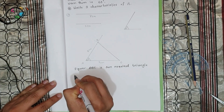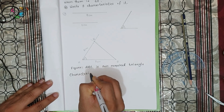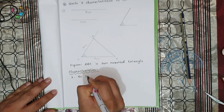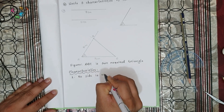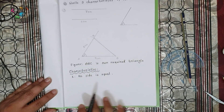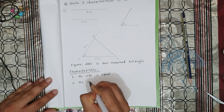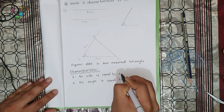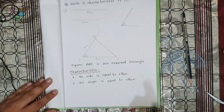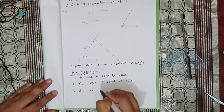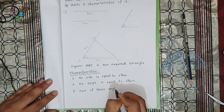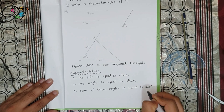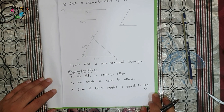Now we can write the properties or characteristics. We write three characteristics. Characteristic number one: no side is equal to other. Number two: no angle is equal to other. Number three — the common one for all triangles — the sum of three angles is equal to 180 degrees. This completes our question number three.